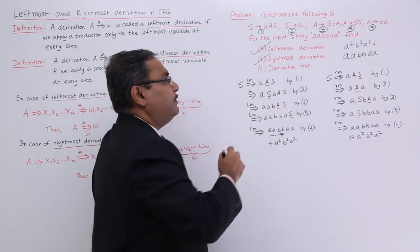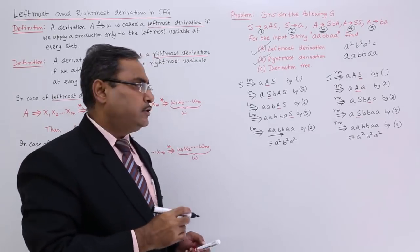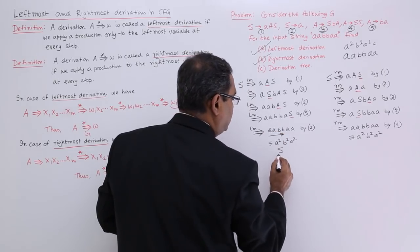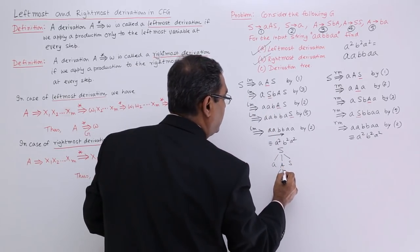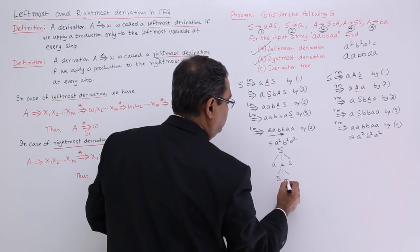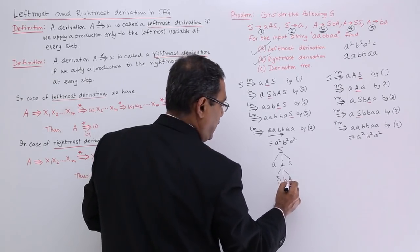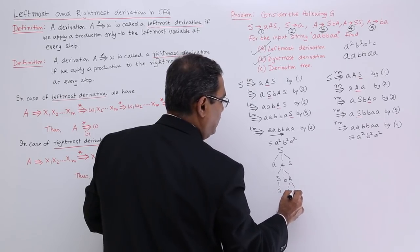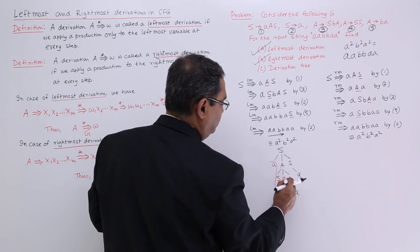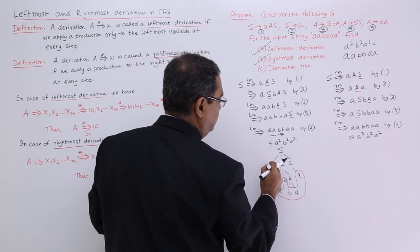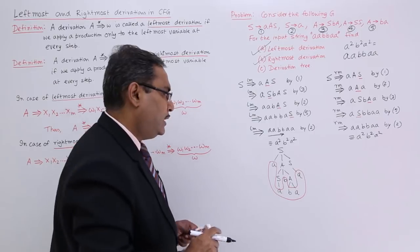Now the last topic is the derivation tree. Let us form the derivation tree for both, and you will find they are actually the same. First, from S I was having A, A, S. From this A, I am having S, B, A. From this S, I am having A. From this A, I am having B, A. So my yield will be A A B B A A. In this way this particular tree has been generated — it is known as the derivation tree.